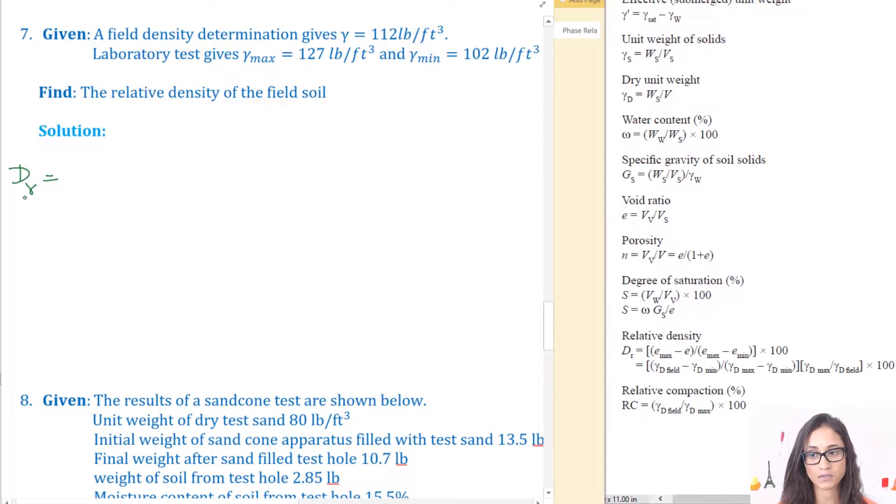So this is our relative density. So I have the density gamma d field. I'm just going to write f for field just so we can go a little faster.